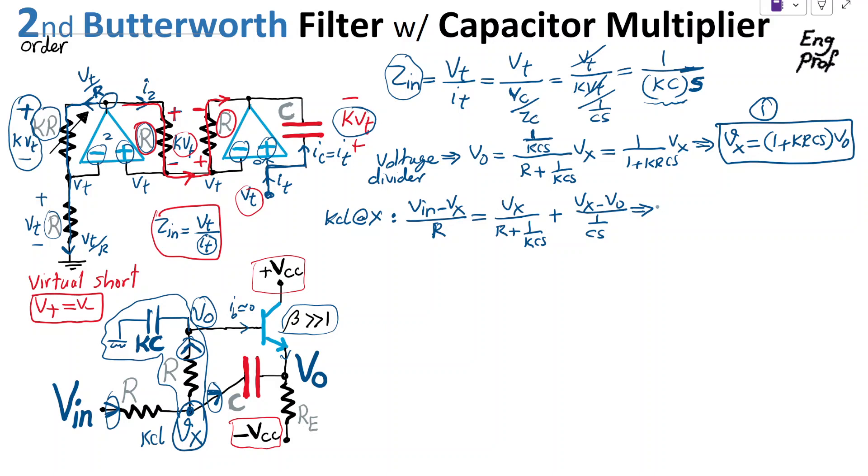If we simplify things, VIN equals VX times, moving this negative VX over R to the other side and multiply everything by R, we get one plus KRCS over one plus KRCS, and then we get RCS, and finally minus RCS Vout. So this is equation number two. I'm going to use combination of one and two and substitute for VX using one in equation two.